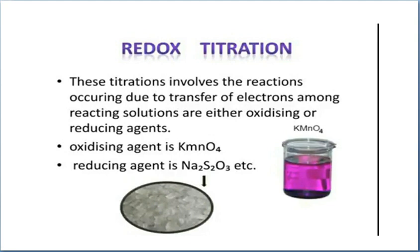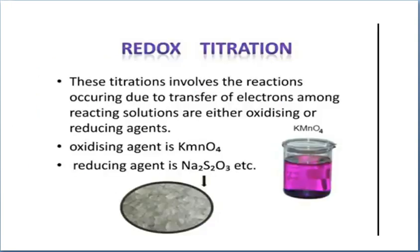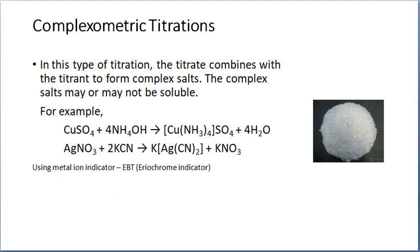What is meant by complexometric titration? The word itself gives us the answer — there is a formation of a complex. In this type of titration, the titrate combines with the titrant to form complex salts. The titrate is the solution taken in the conical flask, and the titrant is the burette solution. Both combine together to form a complex. The complex may or may not be soluble — it may be either soluble or insoluble.